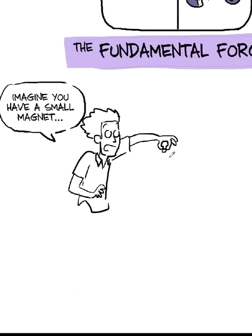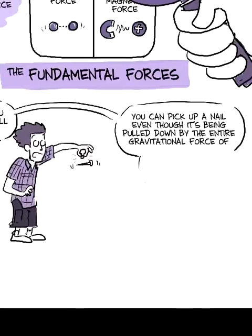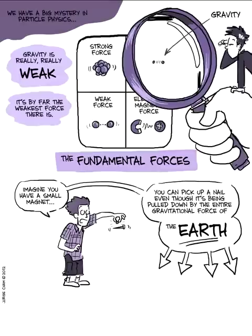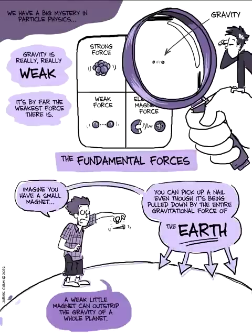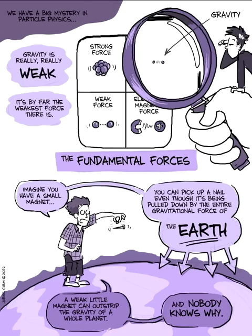Imagine you have a magnet. You can pick up a nail with a very small, weak magnet. That nail is being pulled down by the entire gravitational force of the Earth. But it's easily counteracted by the magnetic force of a very tiny, small magnet. So a very weak, little magnet can outstrip the entire gravitational force of the Earth. And nobody knows why.